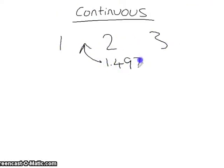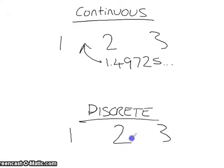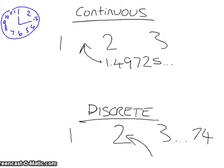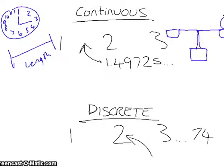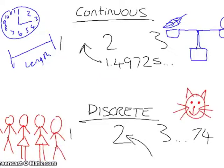Similarly, there are two types of variables. Continuous variables can take any value in a given range, and discrete variables can only take specific values in a given range. Examples of continuous variables are time, length, and weight. Discrete variables are things like number of girls in a family or the number of cats an old crazy woman has.